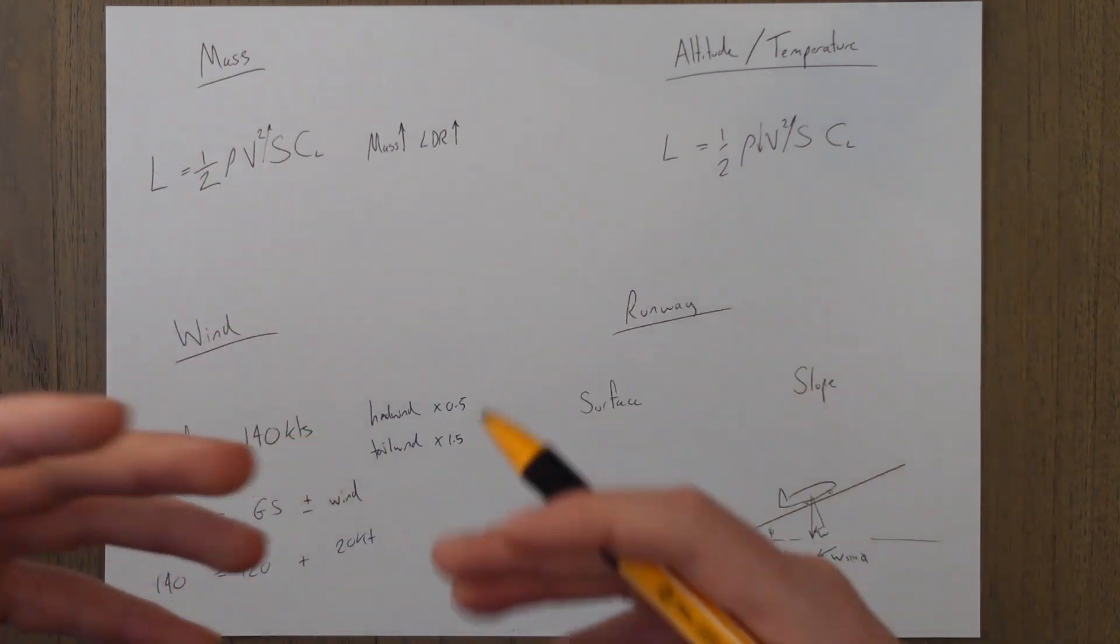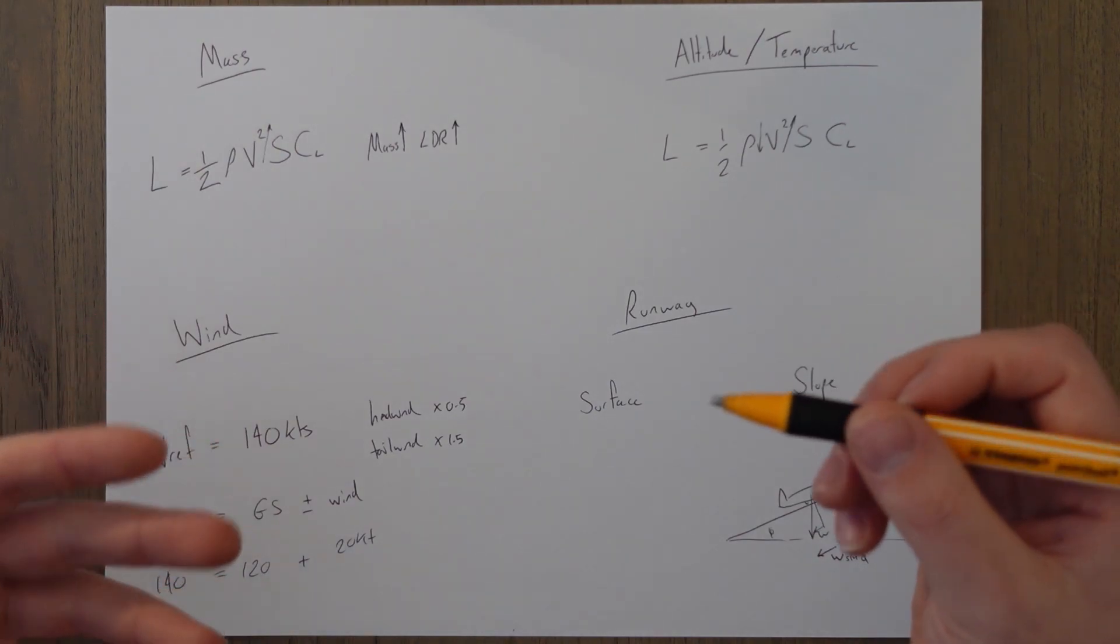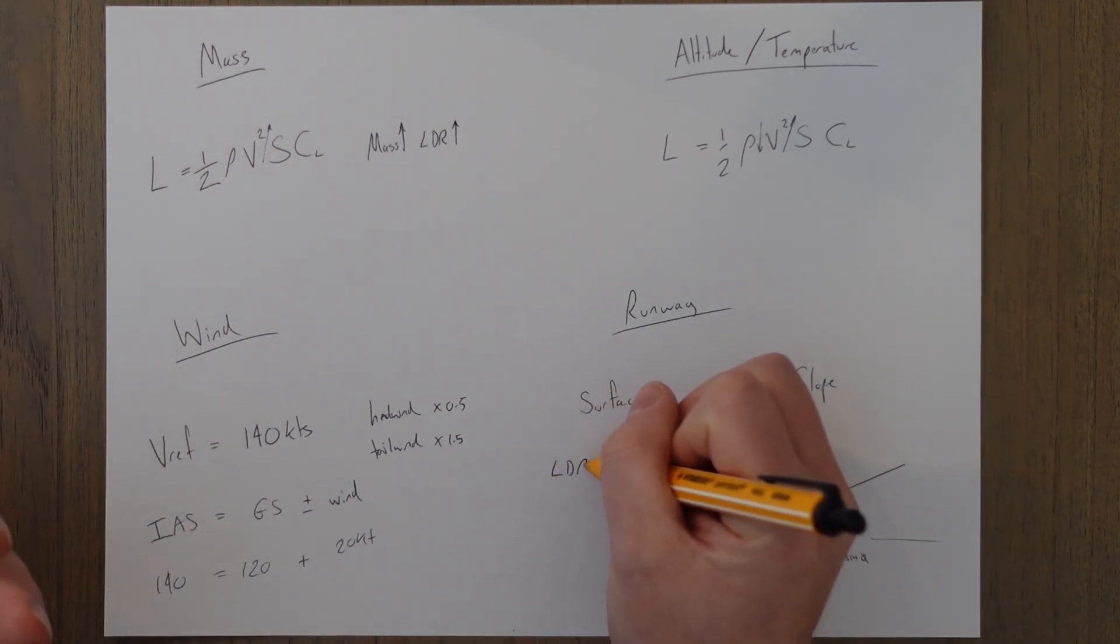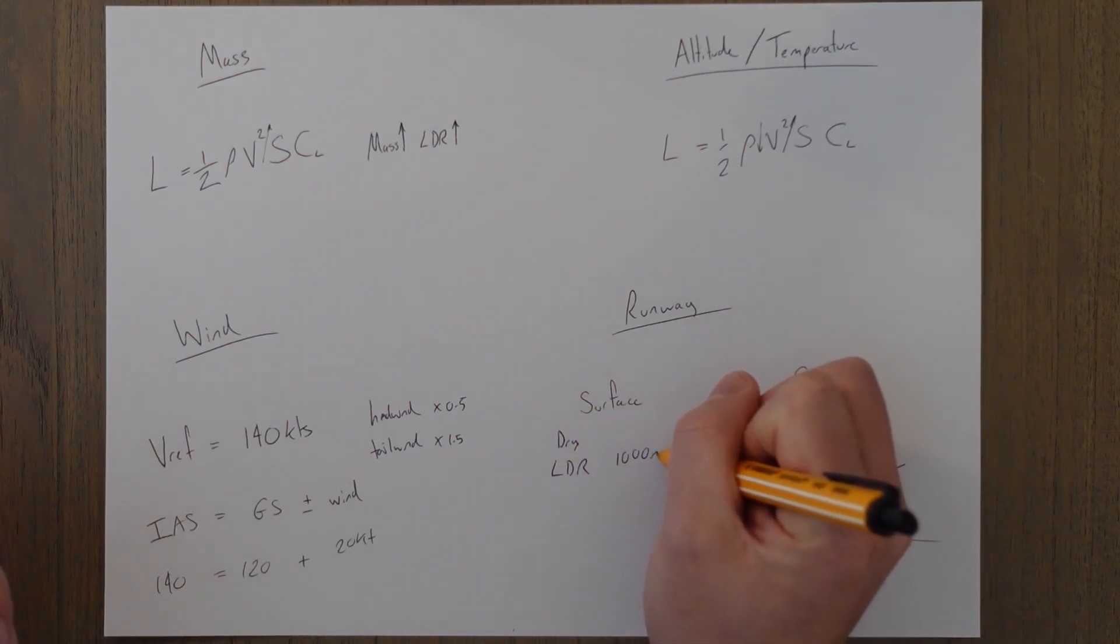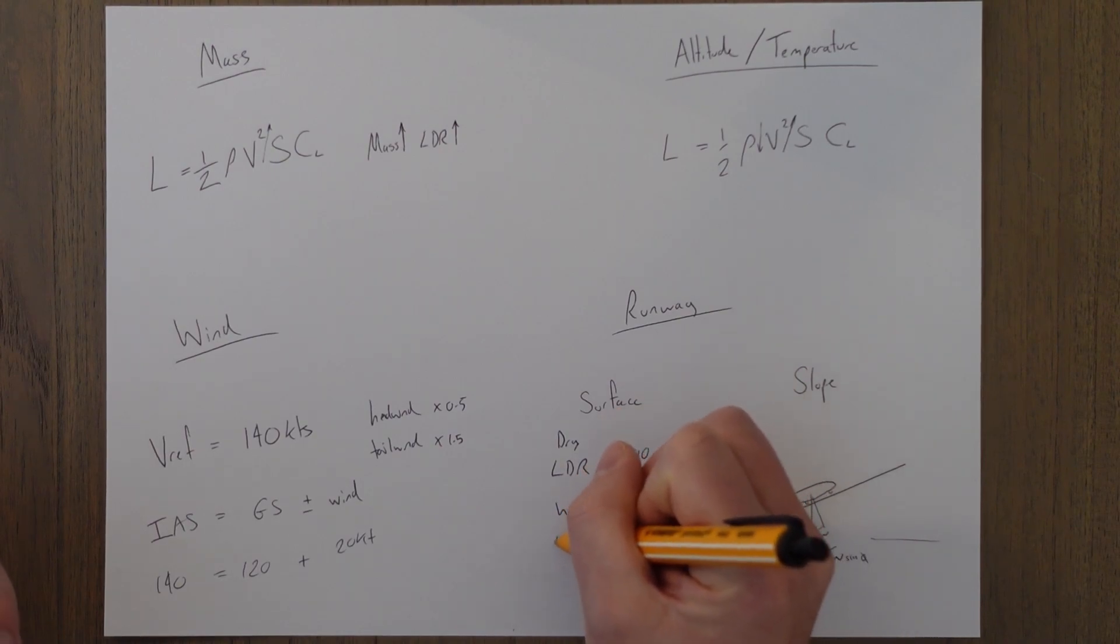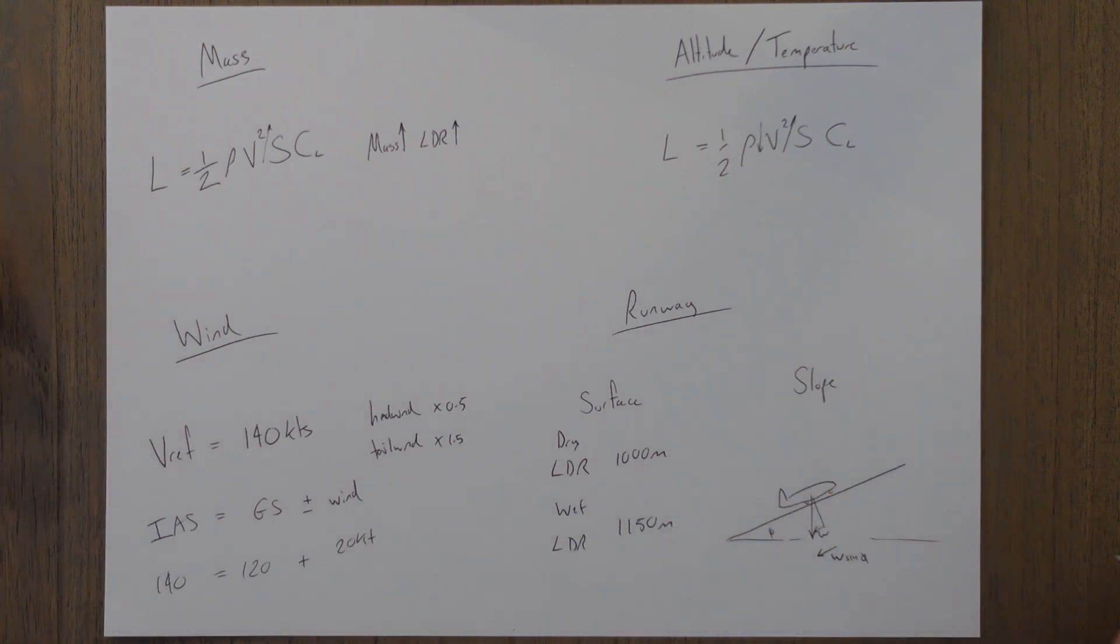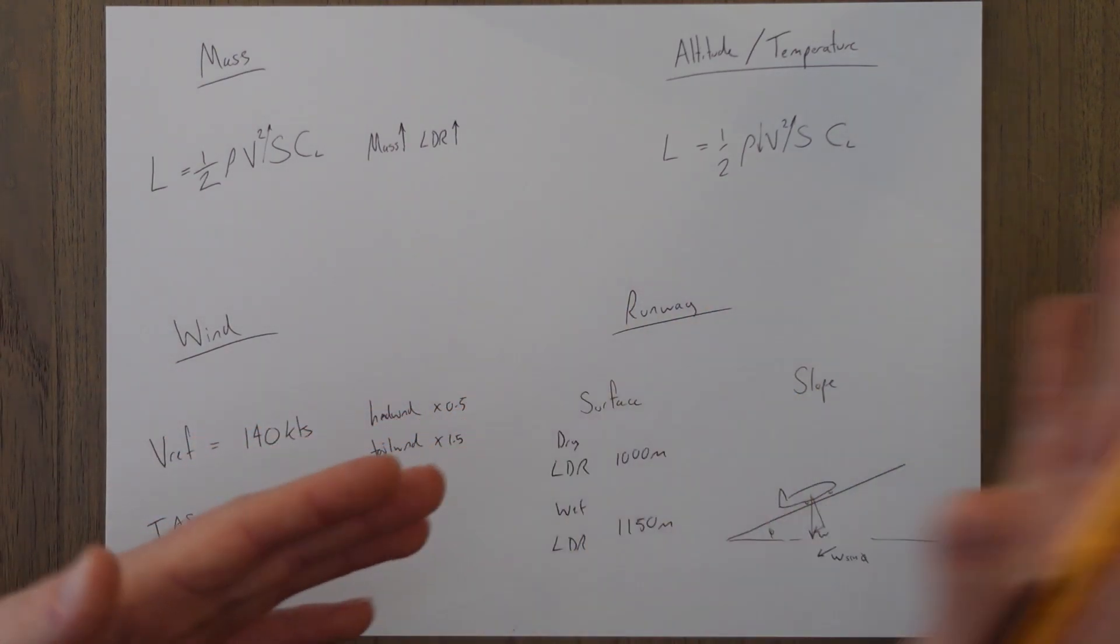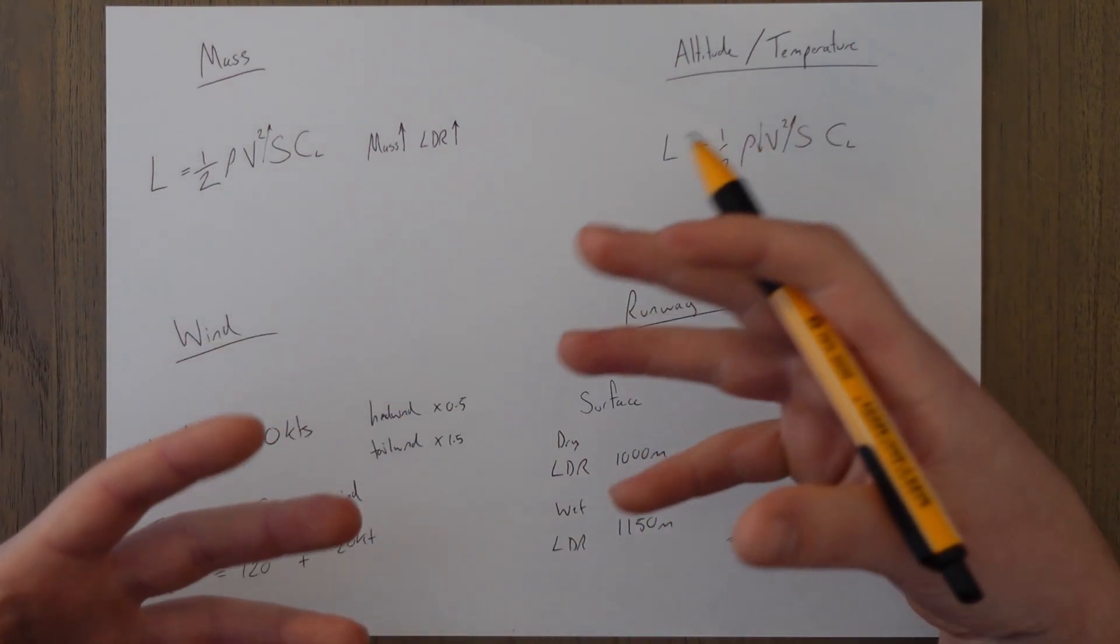If the runway is wet for example the normal factor to apply to your calculated landing distance is 1.15. So say we had a landing distance required when dry of a thousand meters then our wet landing distance required would be 1150 meters, simple. And if that was going to make us go off the end of the runway or something we might need to use more reverse thrust or a higher level of auto braking or indeed land somewhere else.